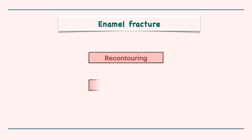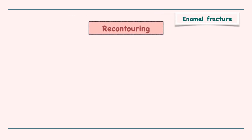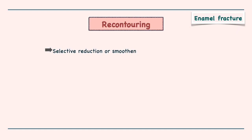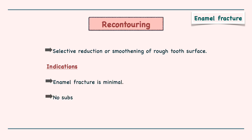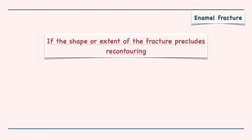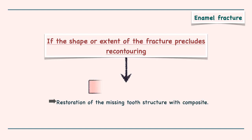Management of enamel fracture involves recontouring and restoration. Recontouring is the selective reduction or smoothening of the rough tooth surface. It is indicated when the enamel fracture is minimal and there is no substantial loss of tooth structure. But if the shape or extent of fracture is too large for recontouring, the missing tooth structure can be restored with composite.